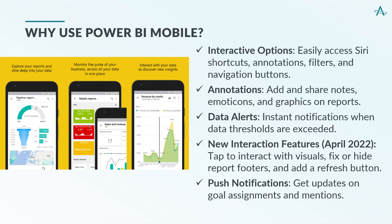Another significant feature is data alerts. Set up notifications to be informed immediately when data thresholds are exceeded, eliminating the need for constant manual checks. The April 2022 update brought new capabilities, including interactive options that allow you to tap on visuals for detailed interactions, fix or hide report footers, and add a refresh button for up-to-date data. Additionally, two new push notifications keep you updated: goal assignment notifications and mention alerts, ensuring you're always informed about key developments and collaborations.